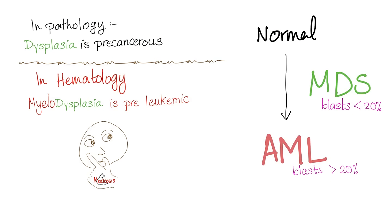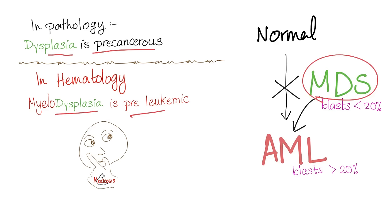Huge difference. MDS is an intermediate gateway between normal state and acute myelogenous leukemia. It can progress towards acute leukemia. The whole purpose of treatment is to prevent progression of MDS into leukemia. You know from pathology that dysplasia is precancerous. And in hematology, myelodysplasia is preleukemic, especially AML.